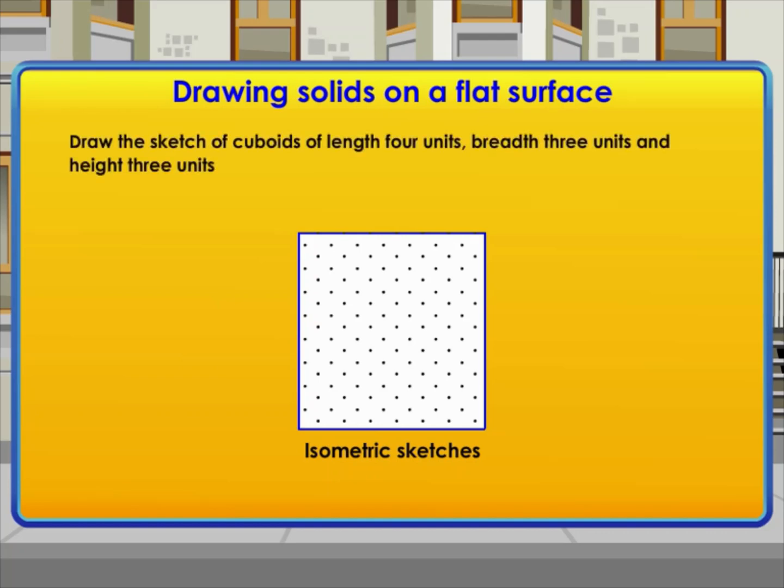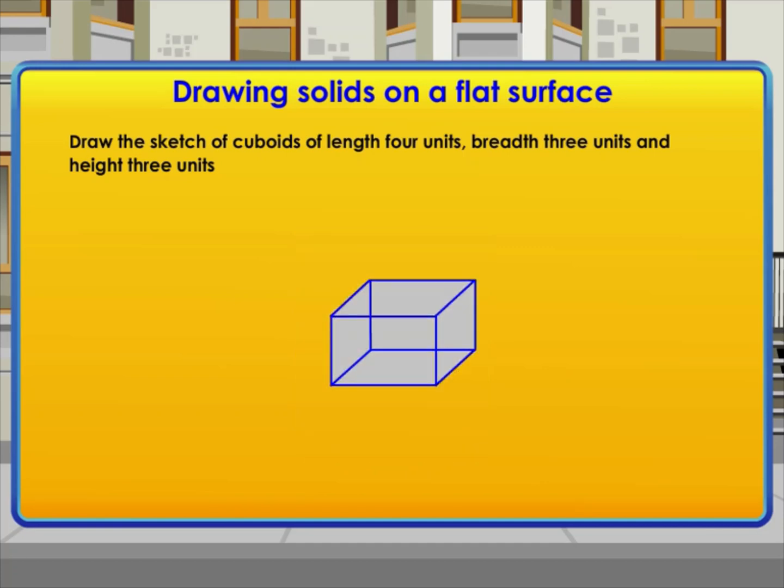Let's try to draw the sketch of cuboids of length 4 units, breadth 3 units, and height 3 units. First, draw a rectangle of length 4 units and breadth 3 units. Then, 4 parallel line segments, each of length 3 units, are drawn starting from the 4 corners of the rectangle. Finally, the matching corners with appropriate line segments are connected. The isometric sketch of cuboid is formed. Observe that the measurements are of exact size, which is not the case with oblique sketches.